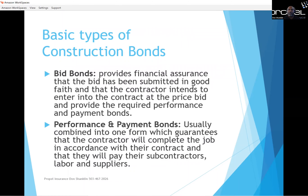There are a couple of different types of construction bonds. Most often you have bid bonds and payment and performance bonds. A bid bond is a way for a project owner to make sure that a construction company is financially solid and will be around to finish the work. Bid bonds provide financial assurance that the bid was submitted in good faith and that the contractor intends to enter into a contract at the price bid and provide the required performance and payment bonds. Performance and payment bonds guarantee the contractor will complete the job per contract and pay their subcontractors, laborers, and suppliers.